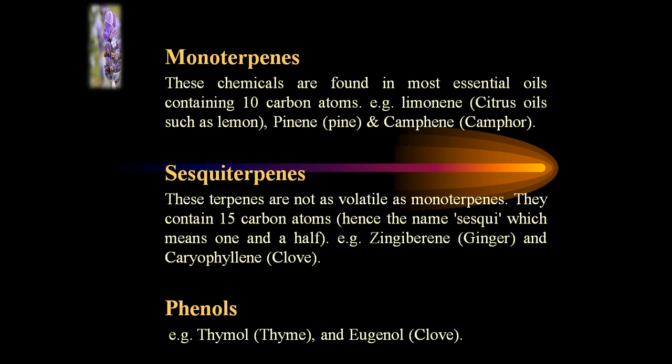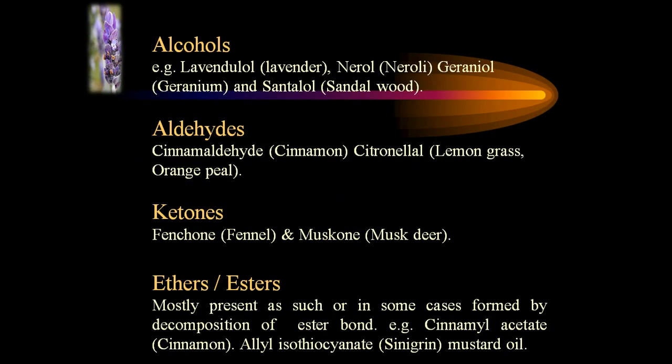In the category of phenols, thymols present in thyme oil and clove are contained in the phenol category. In alcohols, examples include linalool, nerol, geraniol, and santalol, which is present in sandalwood. In the category of aldehydes, cinnamaldehyde is found in cinnamon oil. In the category of ketones, carvone and muscone, which is present in musk.